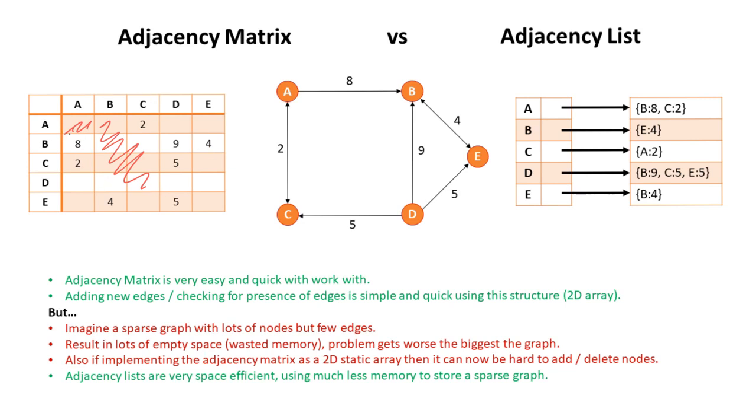Also, if implemented as an adjacency matrix, then it can now be hard to delete individual nodes. The adjacency list, on the other hand, is incredibly space efficient. It uses much less memory to store a sparse graph.